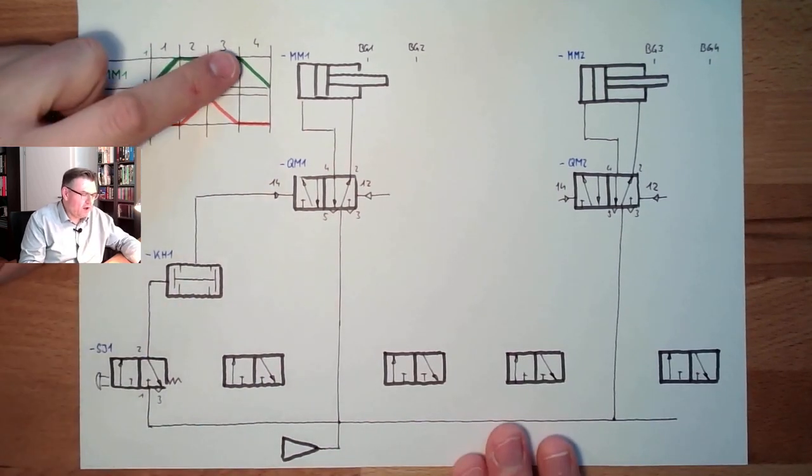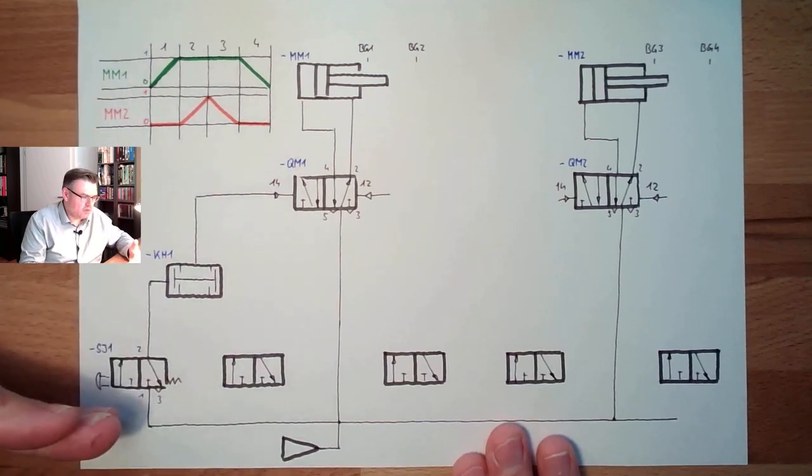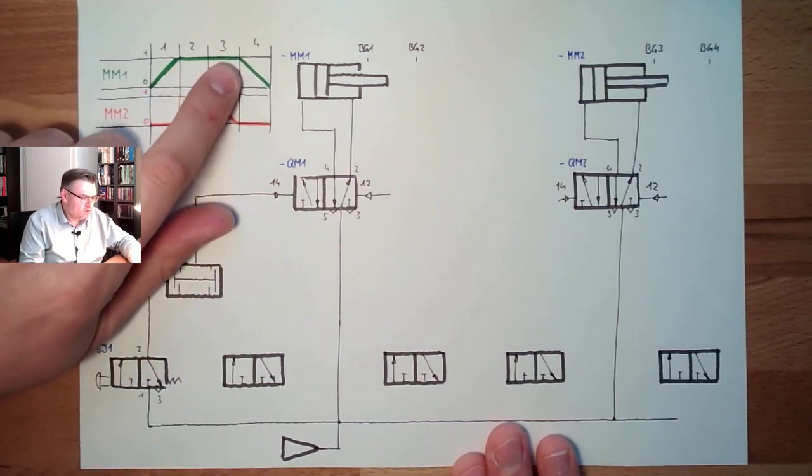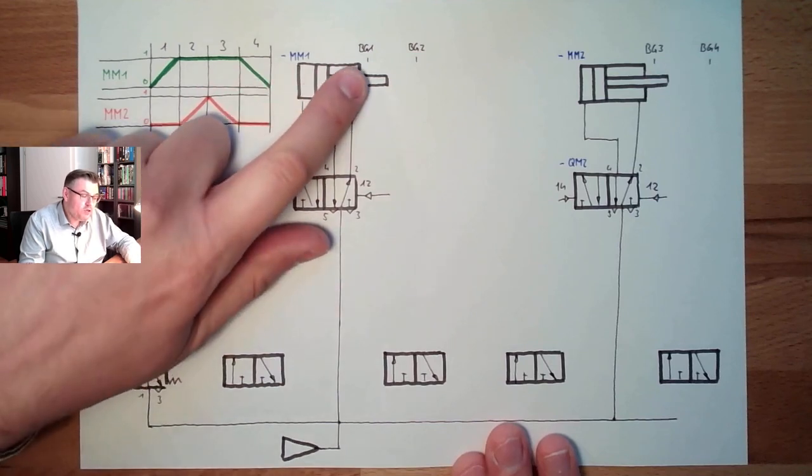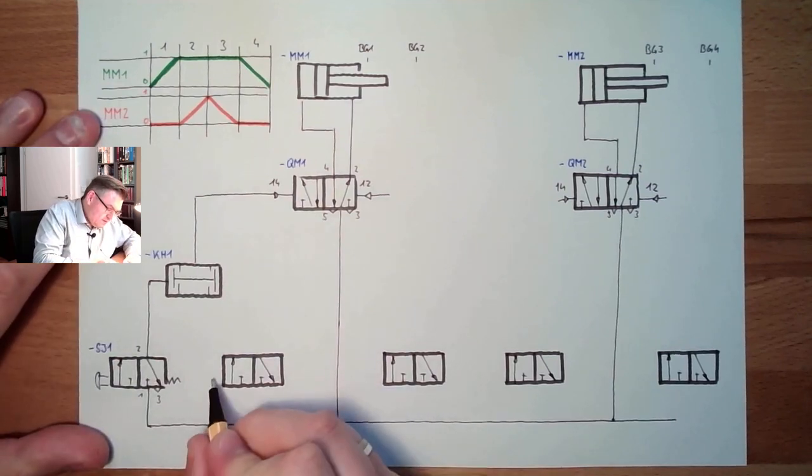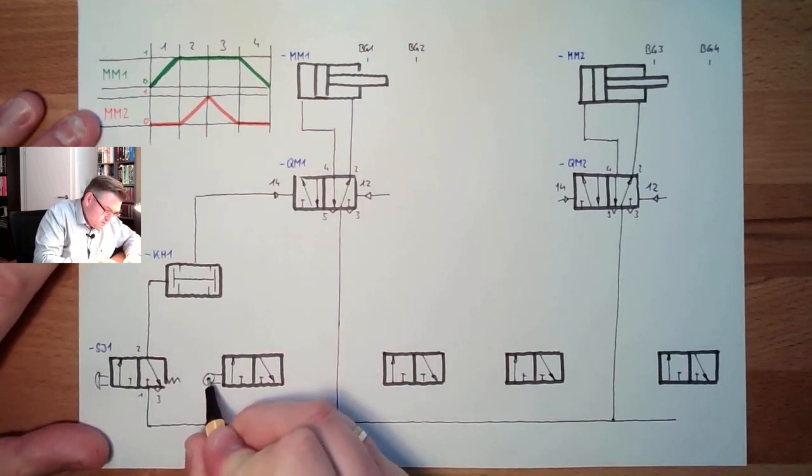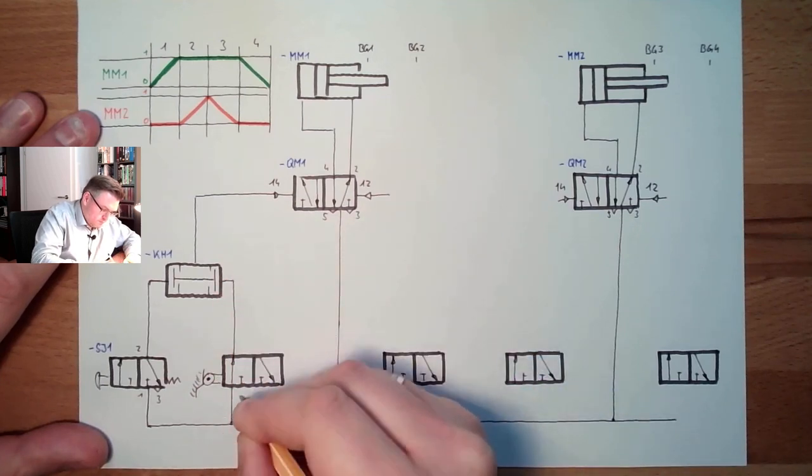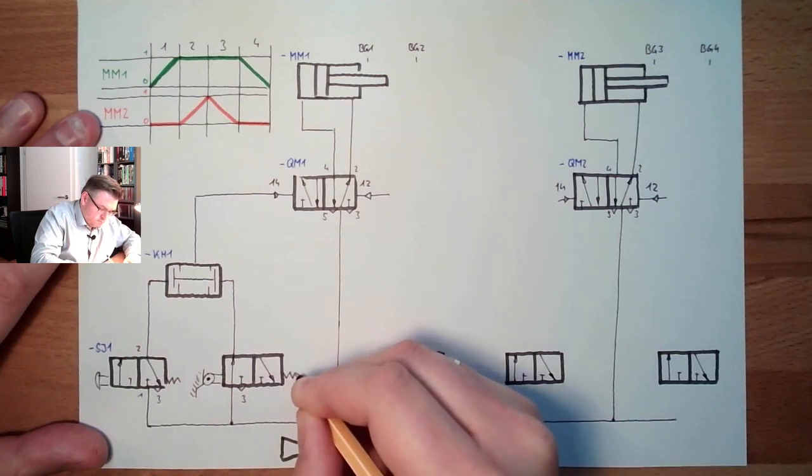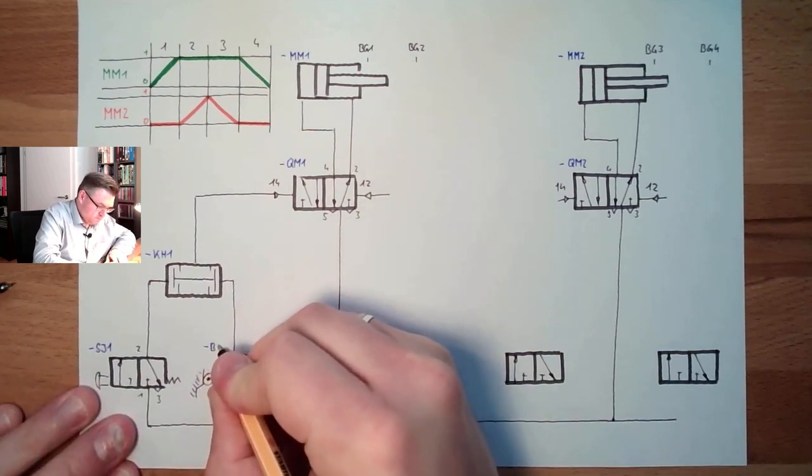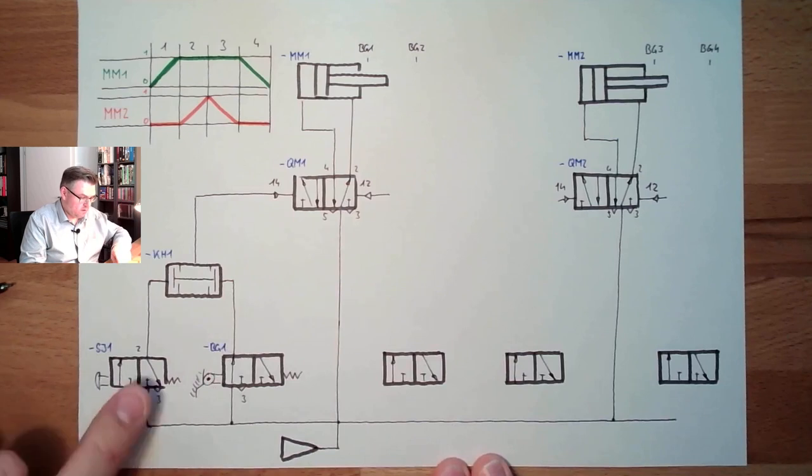So, when are we allowed to start? If BG1 is in, because this is the last thing which is happening here. MM1 is traveling in and BG1 is pressed. So here, this shall be pressed. And this shall be BG1. Check. Start, check.